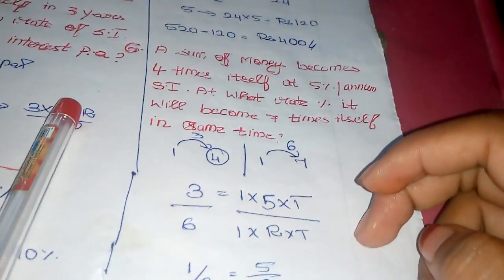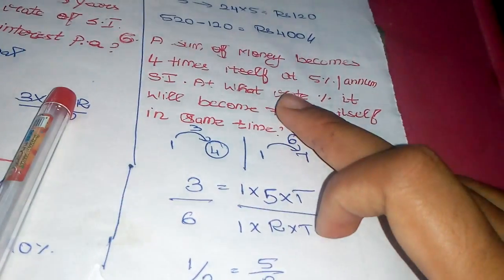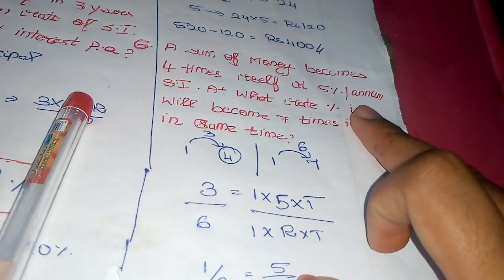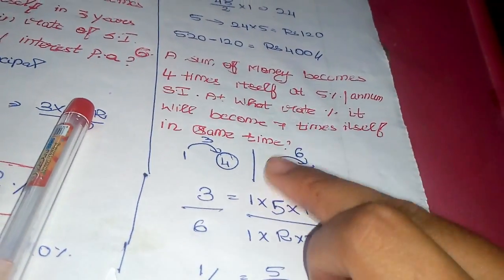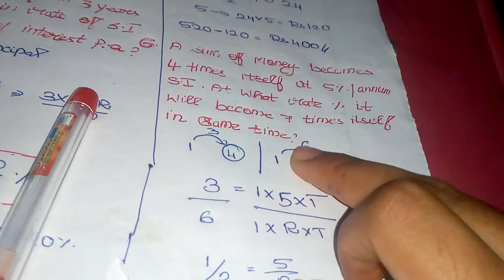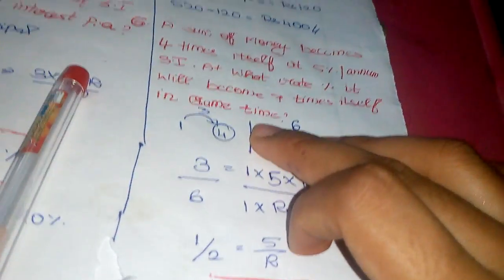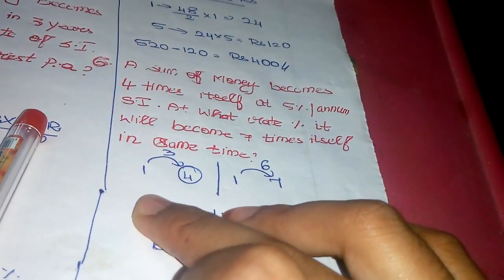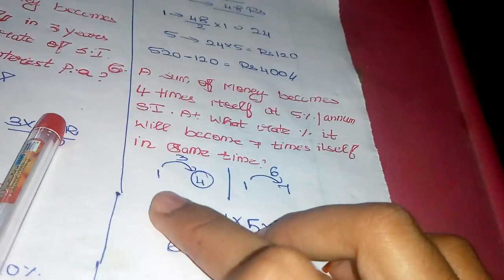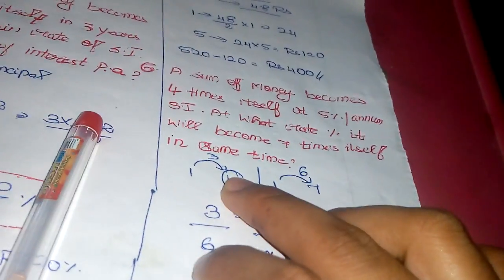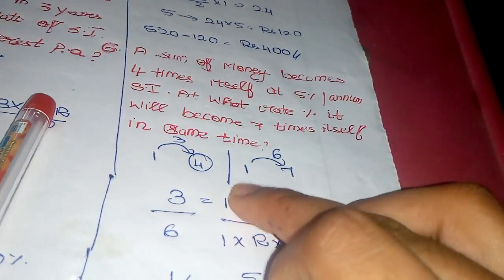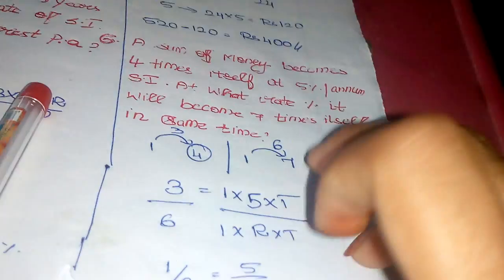Next: A sum of money becomes 4 times itself at 5 percentage per annum simple interest. At what rate percentage will it become 7 times itself in same time? Sum of money becomes 4 times: 4 minus 1 equals 3. Seven times: 7 minus 1 equals 6.